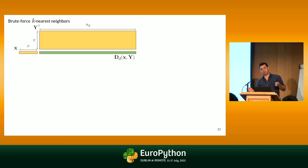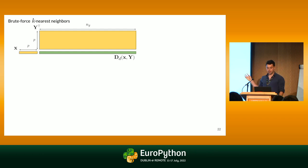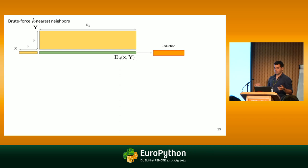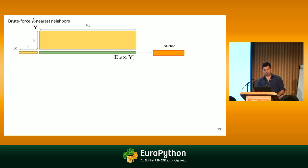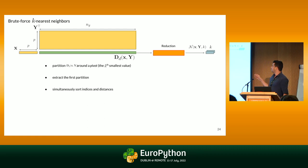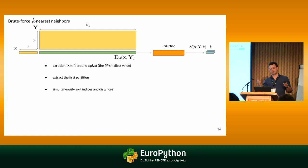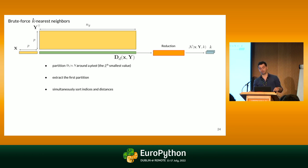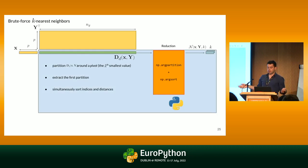For brute-force K-neighbor search, you consider query vector X and matrix Y, compute the distances, and perform a reduction on the distance matrix. The reduction steps are: partition the matrix around a pivot — the K-th smallest value of the array — which lets you extract all K smallest values, then sort them and sort the indices so you have all neighbor information. You're done — you have the neighborhood for your vector X. In Python this can be implemented easily using np.argpartition and np.argsort — just a few NumPy lines.